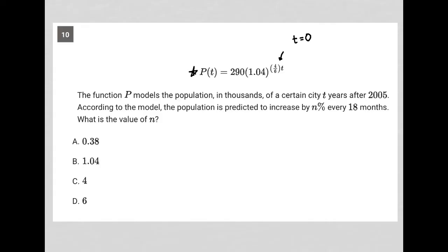I haven't read this yet to see if that's valuable, but I just wanted to make note of that before I start reading. So the question says the function P models the population in thousands of a certain city t years after 2005. So t equals zero would be the year 2005, right? No years after 2005.